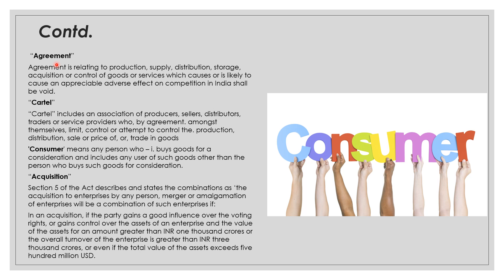'Agreement' relating to production, supply, distribution, storage, acquisition or control of goods or services which causes or is likely to cause an appreciable adverse effect on competition in India shall be void. So under this Act, such agreements are void — those agreements which have adverse effect on competition. Those agreements may relate to production, supply, distribution, storage, acquisition, or control of goods and services.